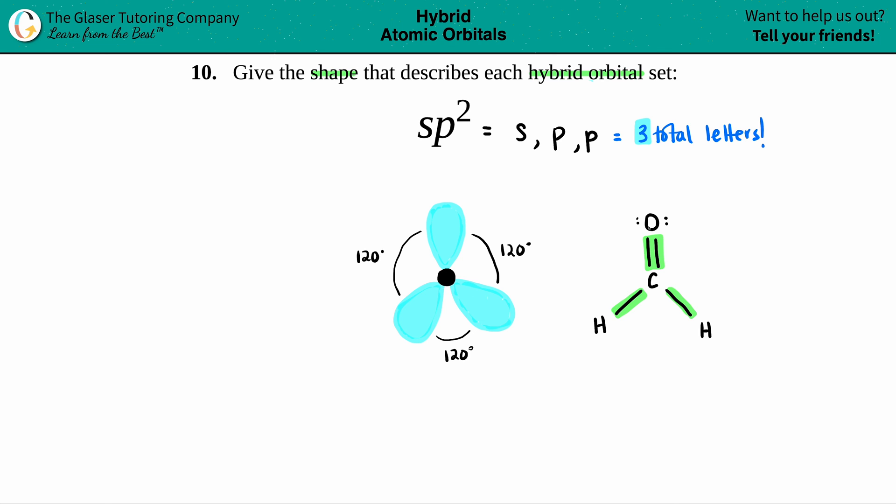So that would be a real-life example of an element that shows sp² hybridization. You can see that the bond angles are 120 all around as well. So 120, 120, 120, and there you go.